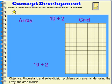Problem 1: Solve a division problem with and without a remainder using the area model. Okay, so to begin with, we're going to be dividing 10 divided by 2. So we're going to divide 10 into two groups. Now the first strategy I'm going to use is I'm going to make an array for that. Now I'm going to use these stars to make my array. And since I know that it's going to be an array, I'm going to try to keep them lined up in nice even rows as best I can.